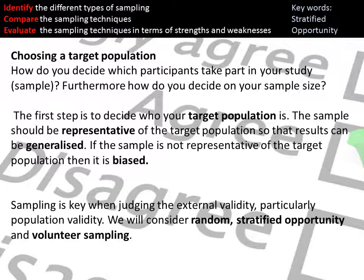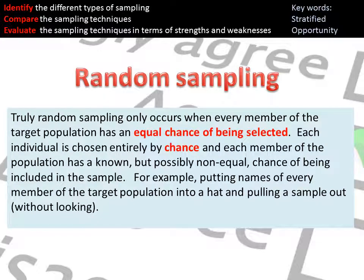The sampling techniques you need to know are random, stratified, opportunity, and volunteer sampling — including their strengths and weaknesses. Random sampling occurs when every single member of the target population has an equal chance of being selected. The best way to visualize this is everyone's name going into a hat, with an equal chance of being drawn out — that's a random sample.